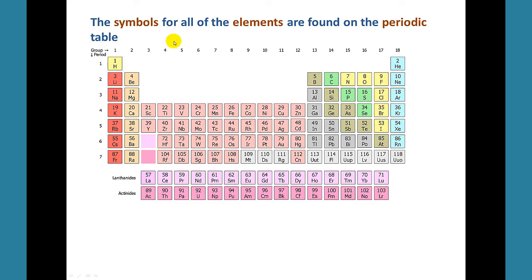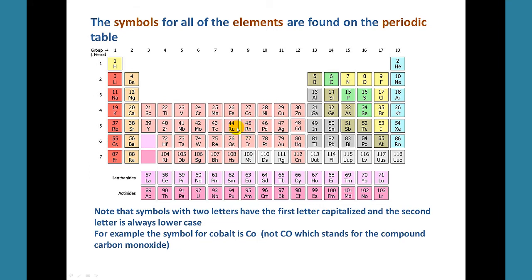Let's take a look at what chemical symbols are. Chemical symbols represent elements, and we can find chemical symbols for all of the elements on the periodic table. Note that symbols like carbon, nitrogen, and oxygen — notice that they are uppercase letters.